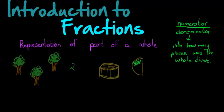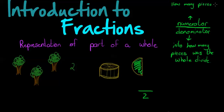Looking at this half piece of cake, the original whole cake was divided into two pieces, so the denominator is two. The numerator tells me how many of those pieces I'm counting. In this case I have one of those halves, so the fraction is one over two.